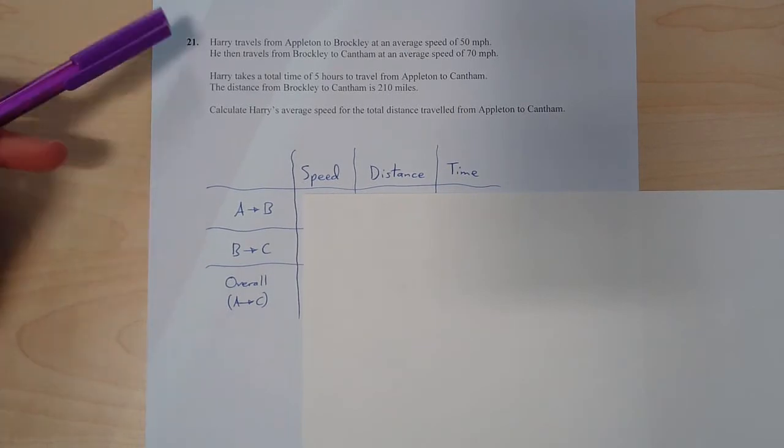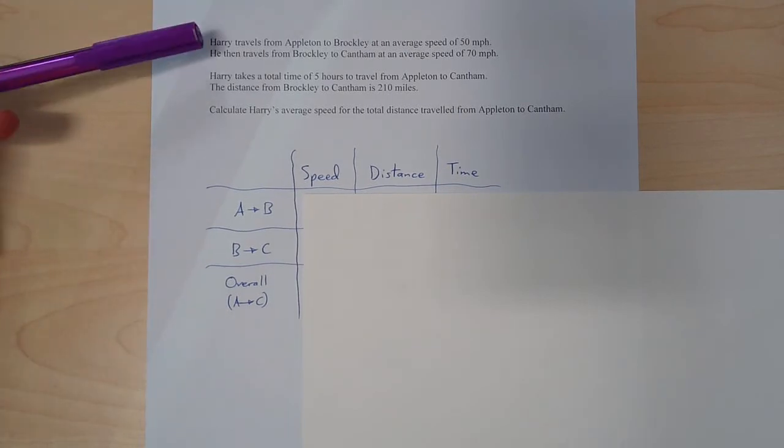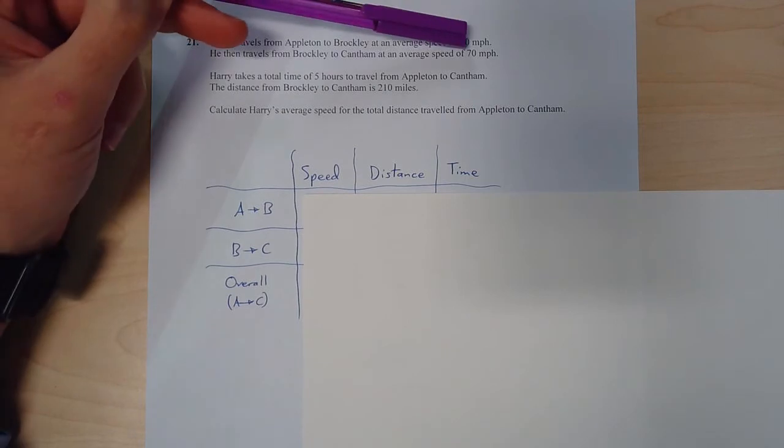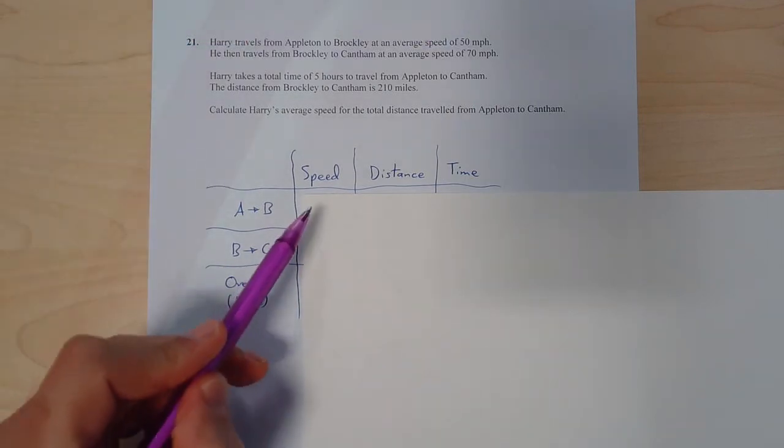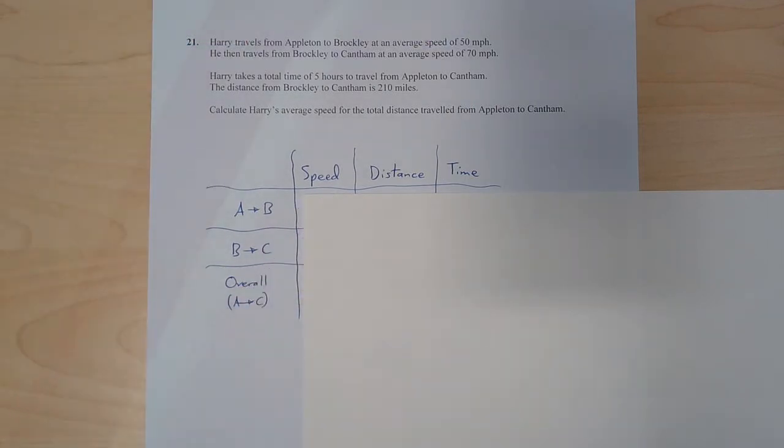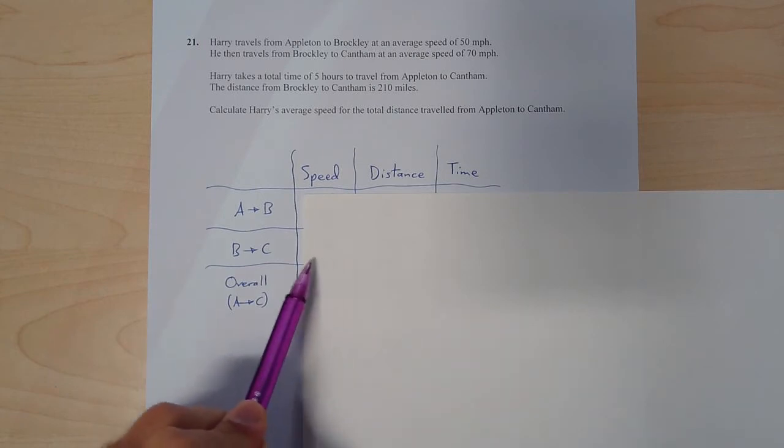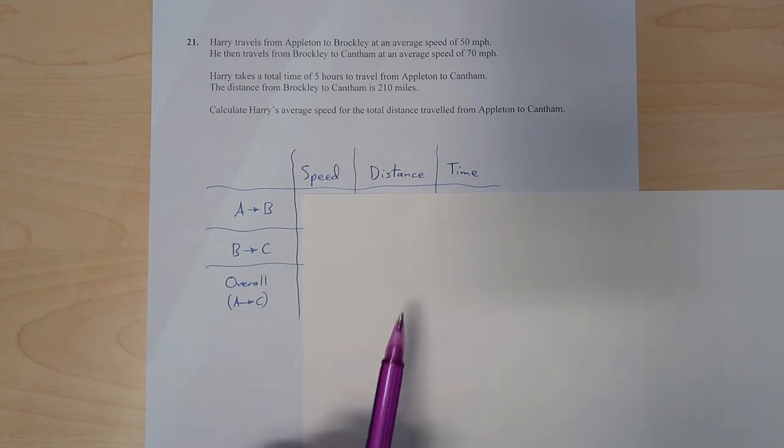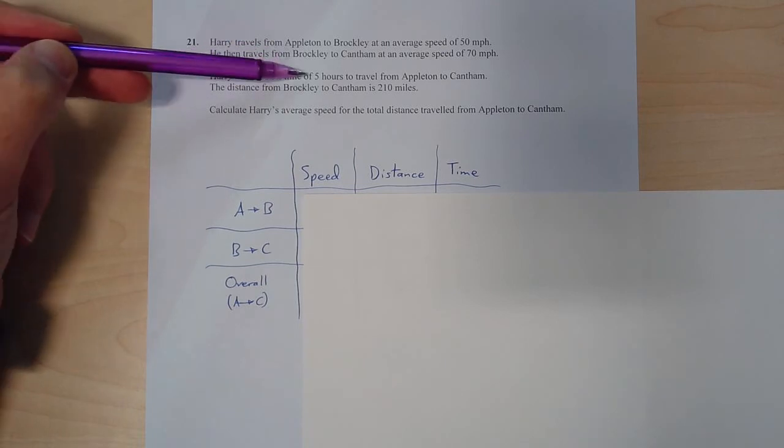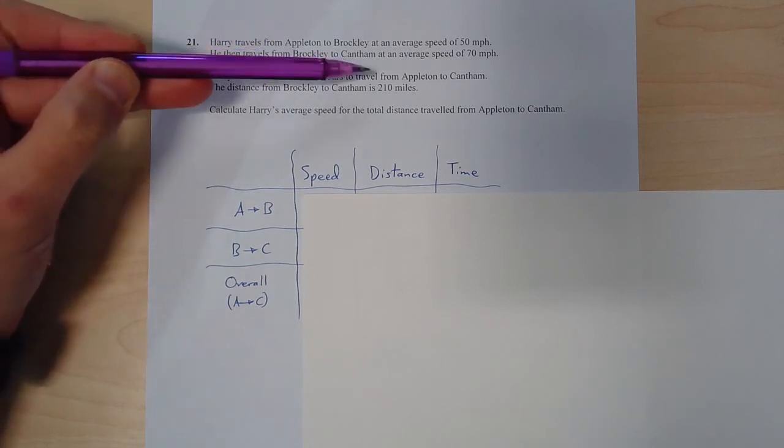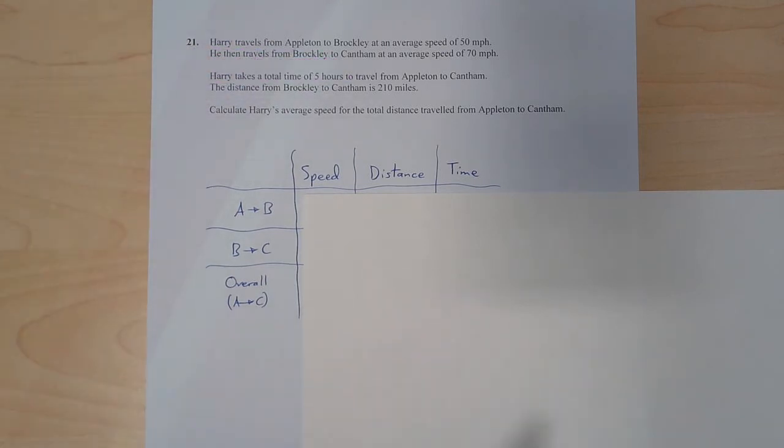So I'm going to start by putting all the information that's in the question. The first bit, average speed of 50 miles per hour is going to go here. And Broccoli to Cantham was 70, so that's going to go there. The distance from Broccoli to Cantham was 210. So the middle box is going to have 210 in. Oh, and then also this one, five hours to travel from Appleton to Cantham. So that's going to go bottom right corner.